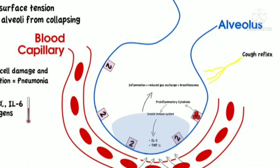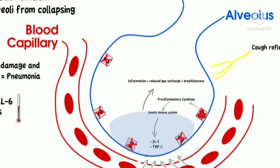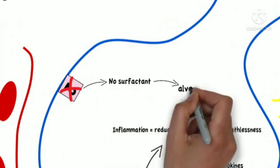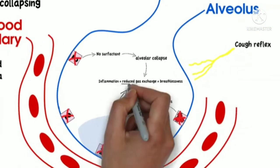Furthermore, the damaged type 2 pneumocytes stop producing surfactant. Without surfactant, the alveoli collapse and gas exchange is not possible.